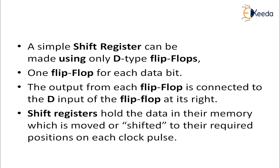What type of register are we going to construct? A 1-bit shift register. So, how many flip-flops do we need? One flip-flop. The output from each flip-flop will be connected to the input of the flip-flop at its right. For example, in a 2-bit shift register, two flip-flops are connected — the output of the first flip-flop is connected to the D input of the next. The shift registers hold the data in their memory, which is moved or shifted to the required position on each clock cycle. Whenever a clock pulse is given, the stored data will be shifting 1-bit.